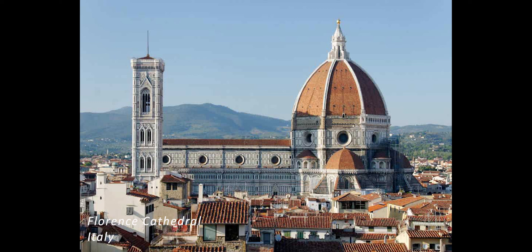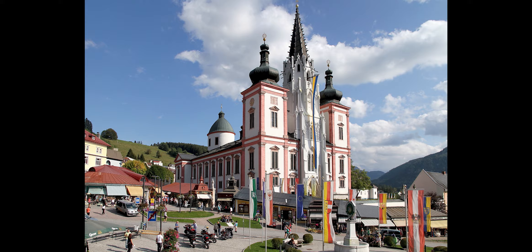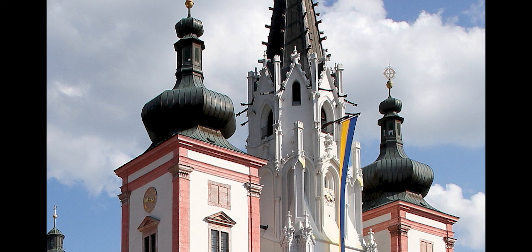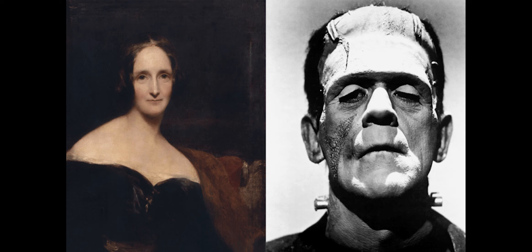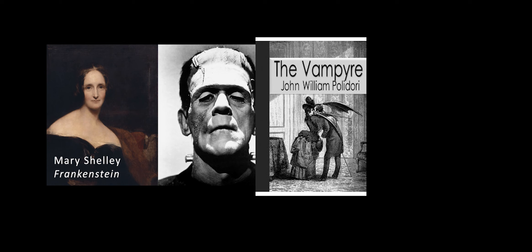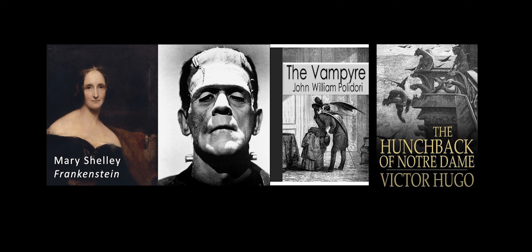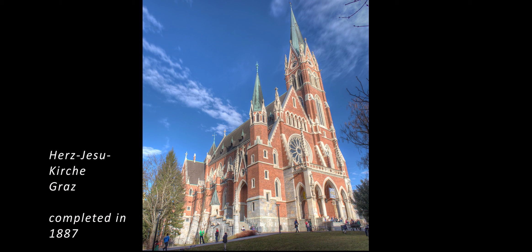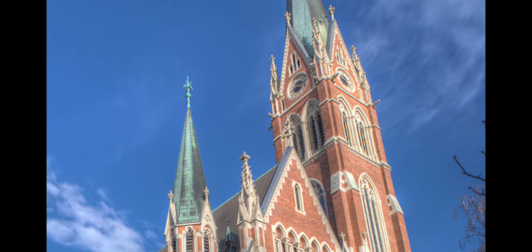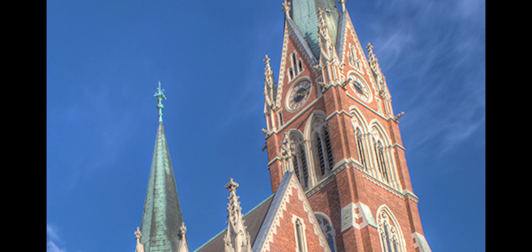During the 1500s, Renaissance architecture from Italy began to spread, offering a more sober, classic, reduced, and elegant style. Over the next centuries, many Gothic churches were renovated in newer styles, such as Baroque in the early 17th century through the mid-18th century. In the early 19th century, Romanticism and literary works such as Mary Shelley's Frankenstein (1818), John Polidori's The Vampire (1819), and Victor Hugo's The Hunchback of Notre Dame (1831) helped usher in a renewed interest in the Gothic aesthetic. The Herz Jesu Kirche — the largest church in Graz — is one of thousands built in a neo-Gothic style, though gargoyles are not as pronounced as they were in the original Gothic style, partly due to improved and cheaper drainage systems.